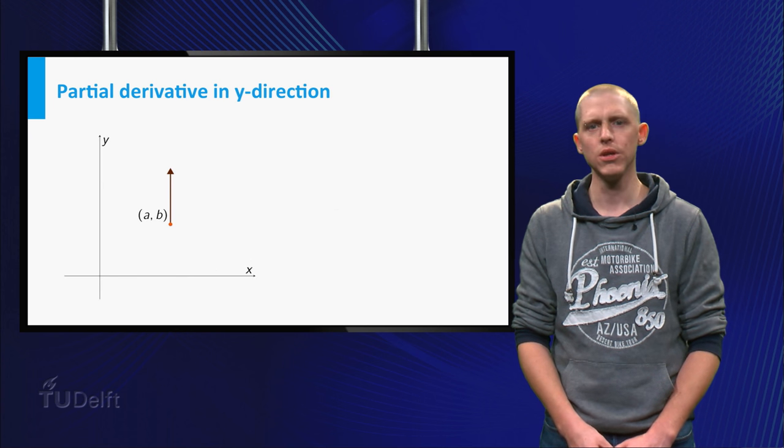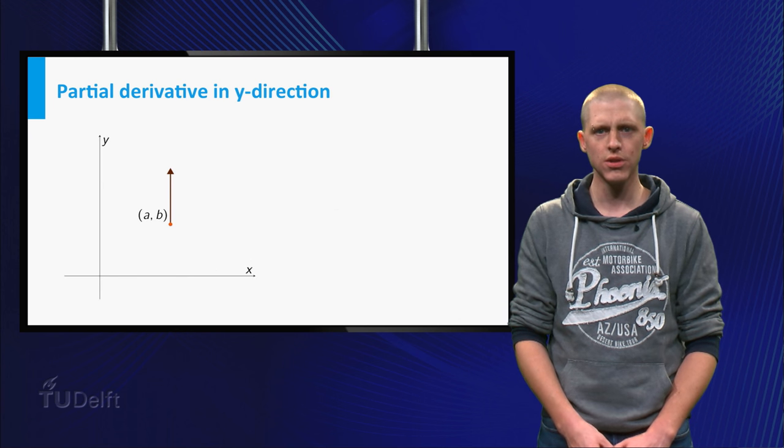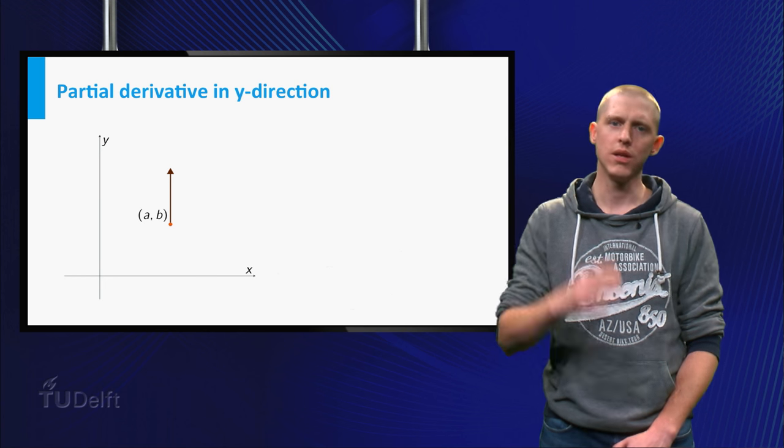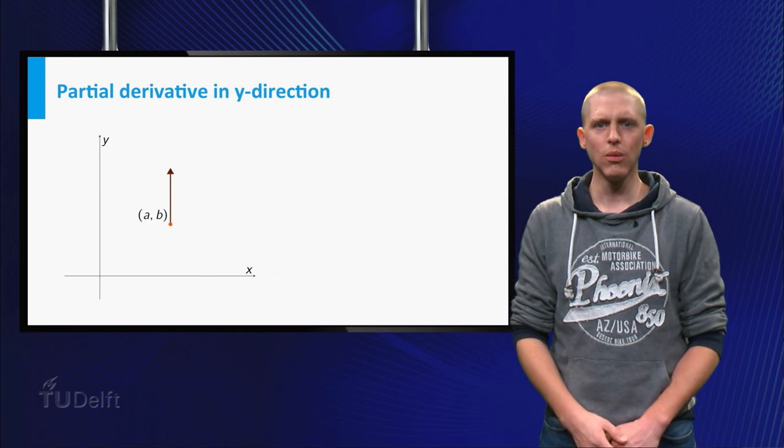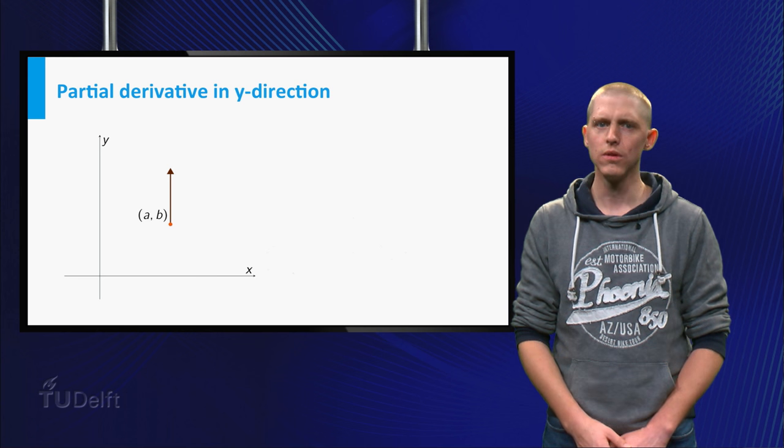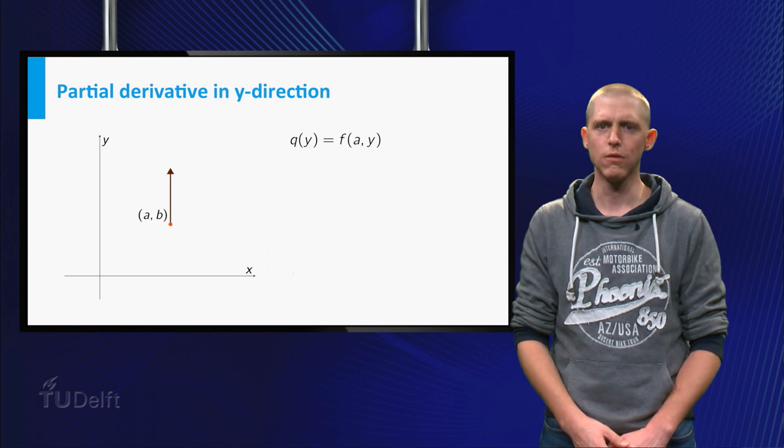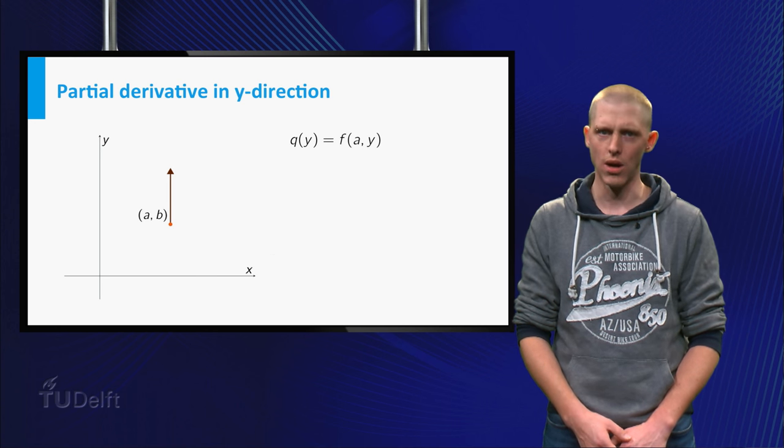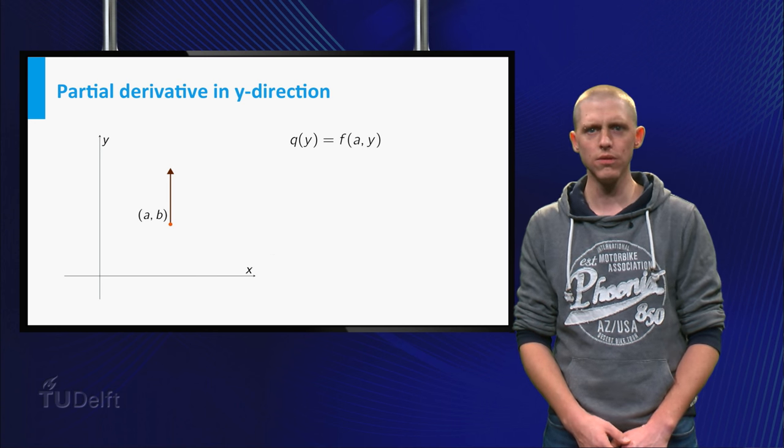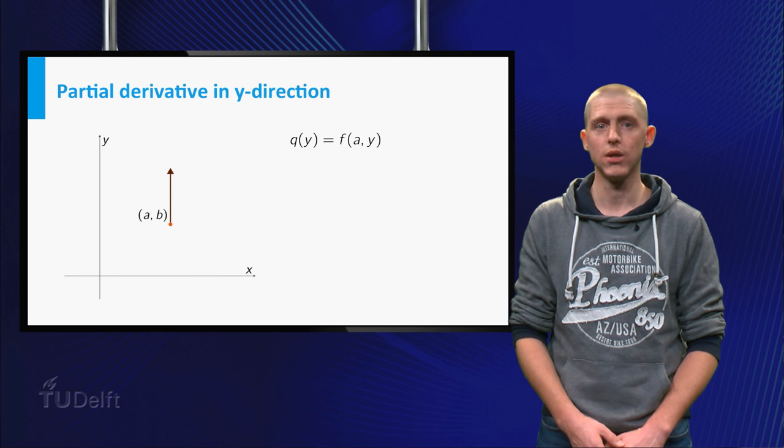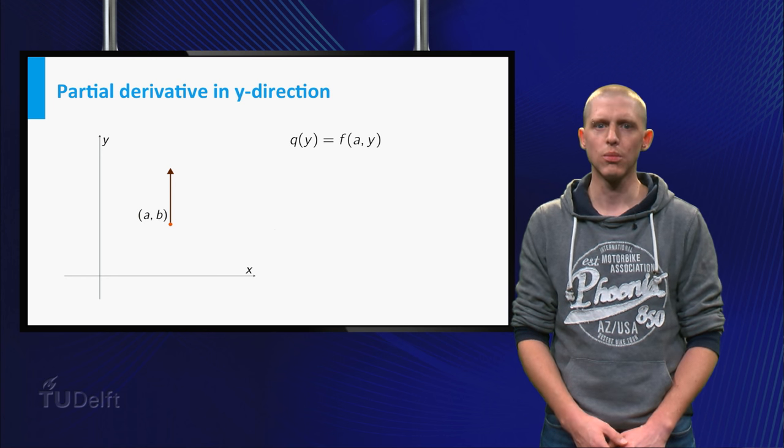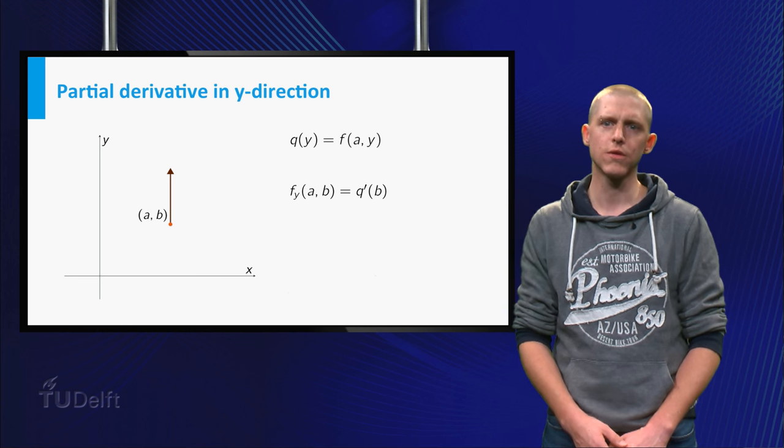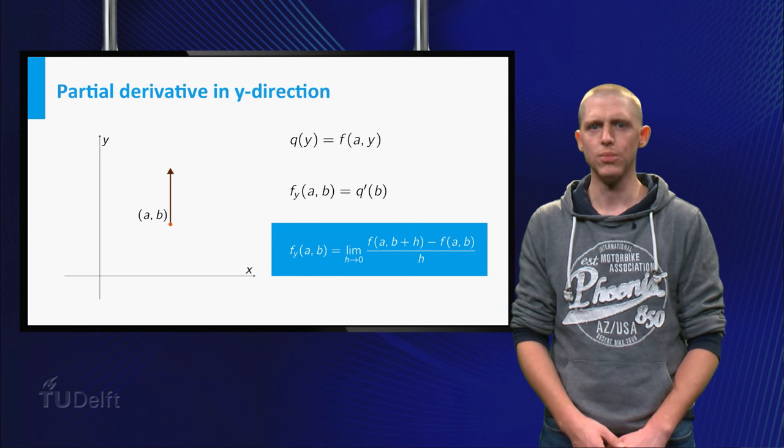Similarly, we could be interested in the rate of change of f when (x,y) moves away from (a,b) in the y-direction. Then we consider the function q, defined by q(y) = f(a,y), which is a function of the single variable y. The partial derivative of f with respect to y at the point (a,b), denoted by f_y(a,b), is simply defined as the derivative of this function q at the point b.